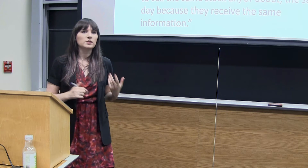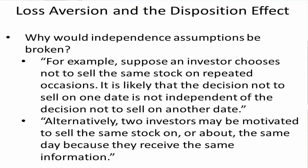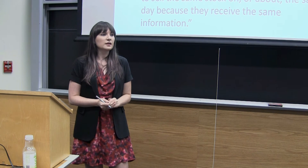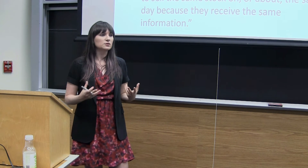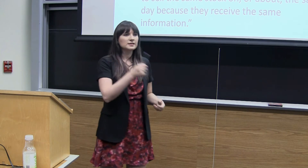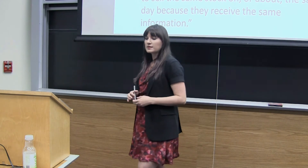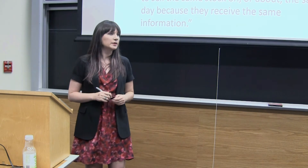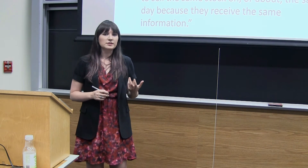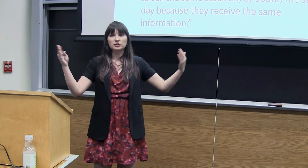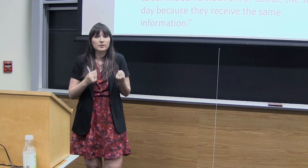These are two quotes from the paper that explain why these errors are likely to be correlated either across investors or across time. If we think about the nature of buying and selling — say people are selling based on information or based on feeling — it's not the case that every investor is getting different information. It's often the case that investors are acting on some form of common information, in which case their actions are not truly independent if they're all coming from that same information.